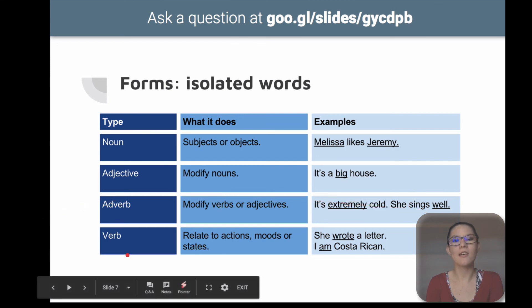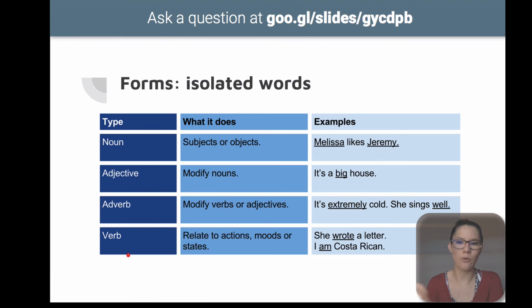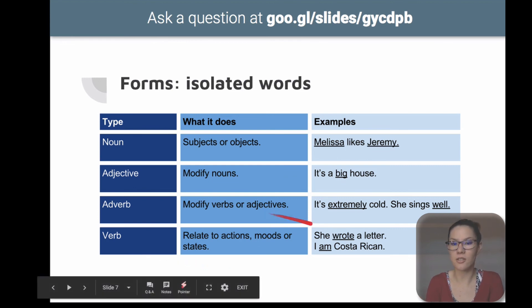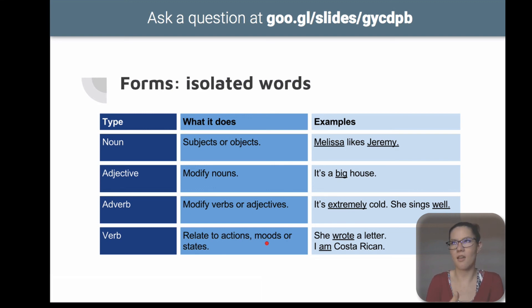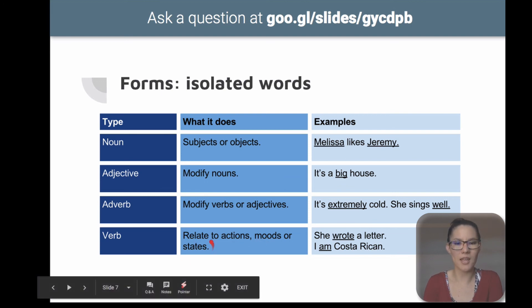And then, a verb, as we already know, tells us what's the action that's being done, like she wrote a letter. The mood. That's why we have different auxiliaries, like can, should, etc., to tell you about suggestion, recommendation, obligation and more. Or states, like I am Costa Rican.